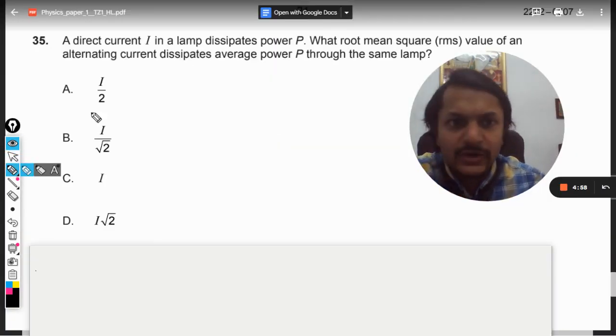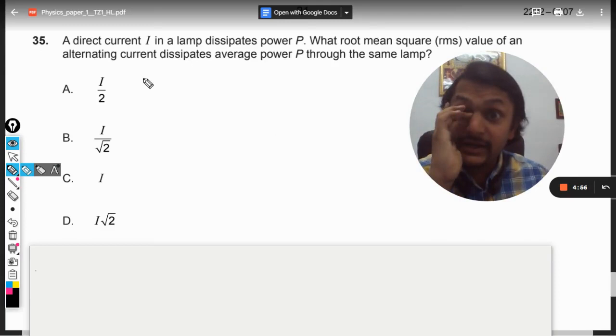Okay, dear students, let us see what is there in this question. A direct current I in a lamp dissipates the power P.